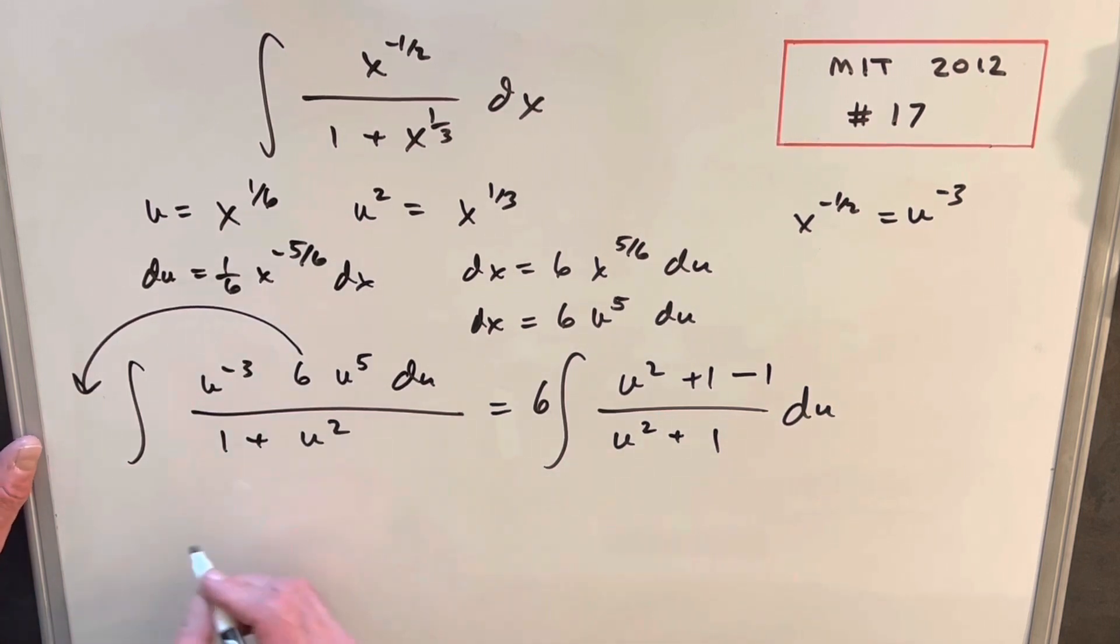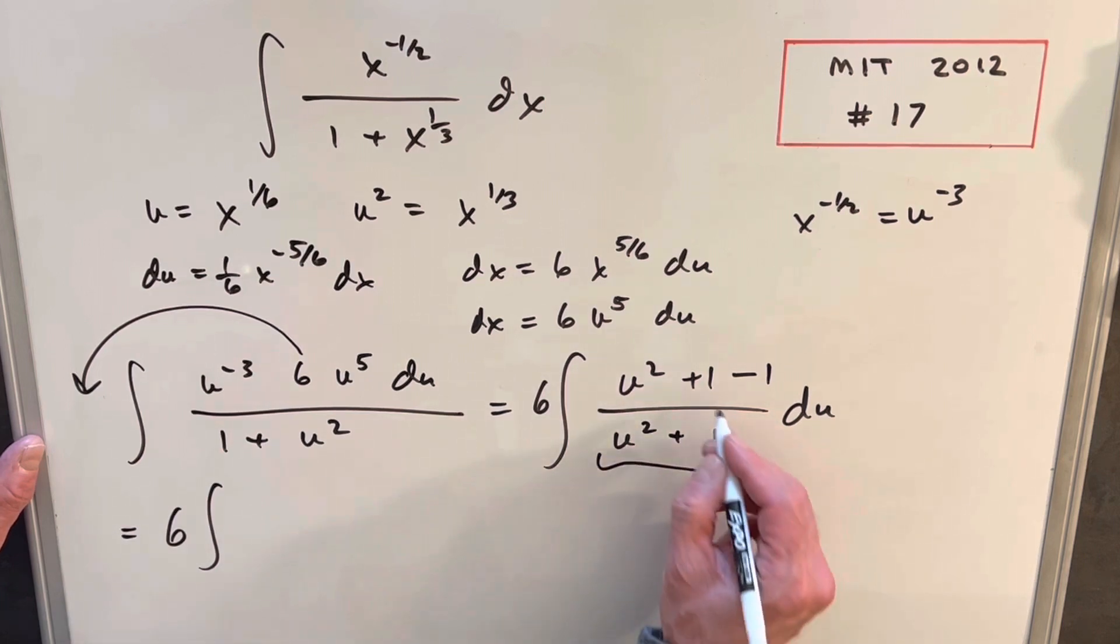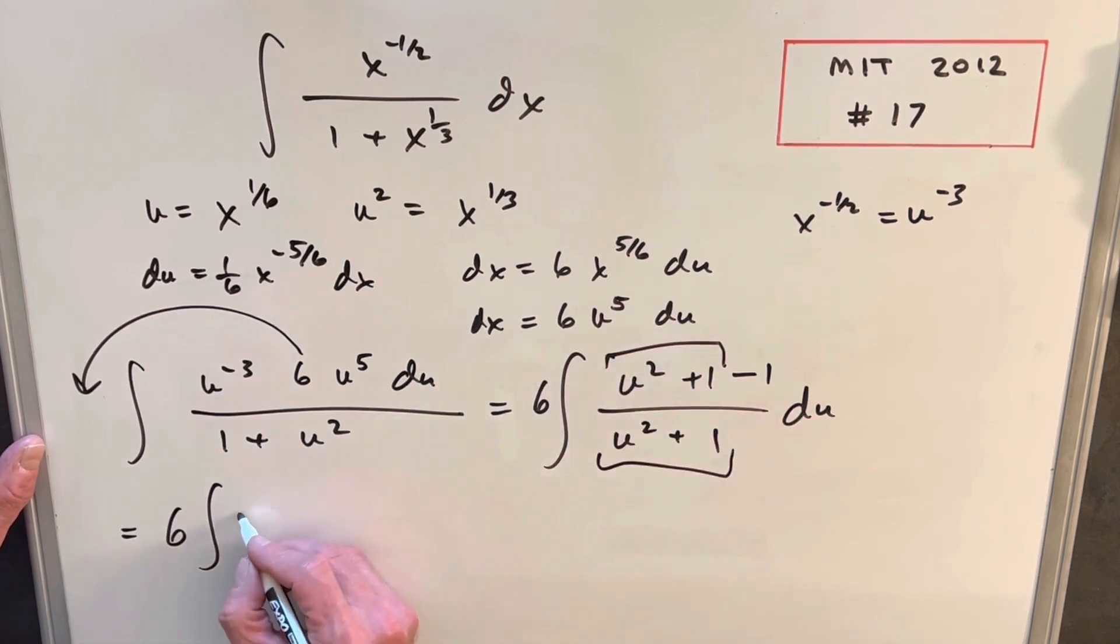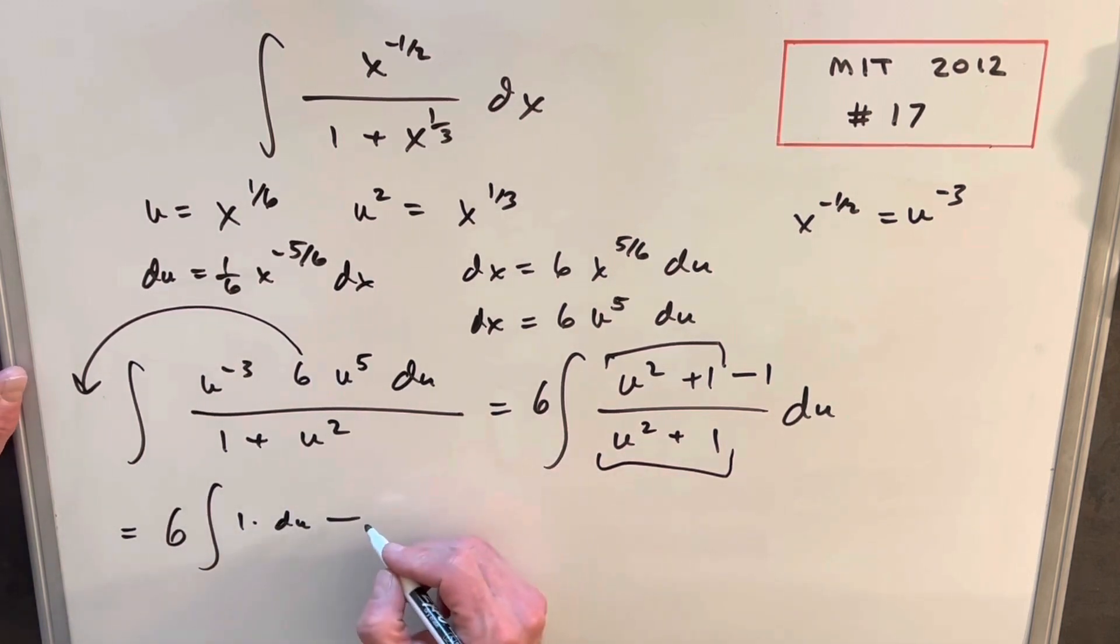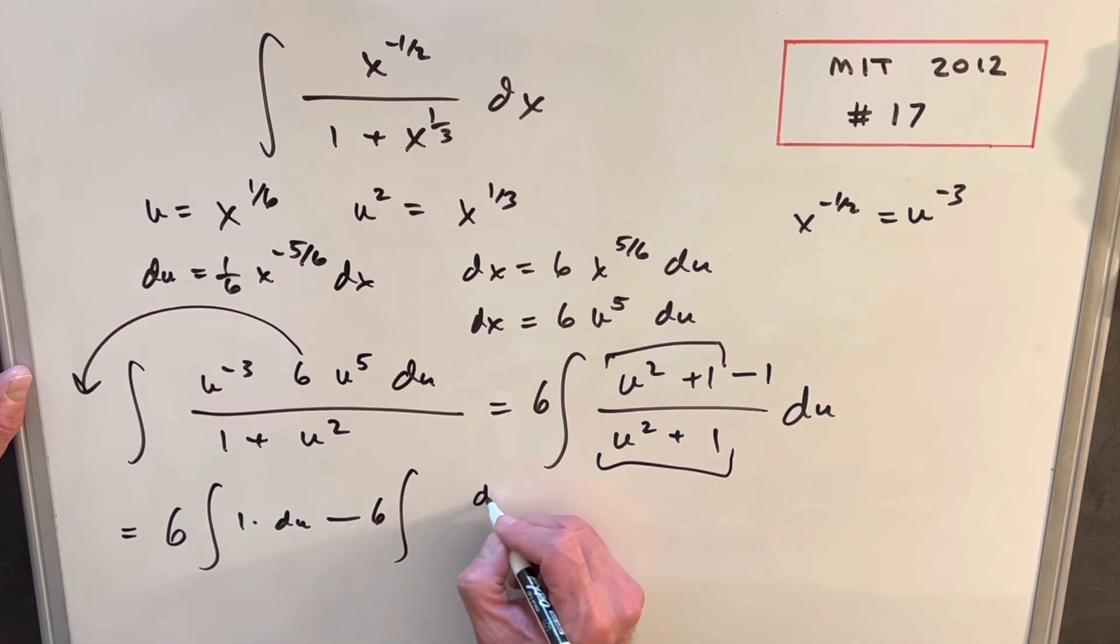Then splitting that up, we can split it into 2 integrals. So our first integral is just going to be this piece here, which is 1. And then in the second integral, we'll distribute our 6. We have this minus sign, and then this is just going to be du over u squared plus 1.